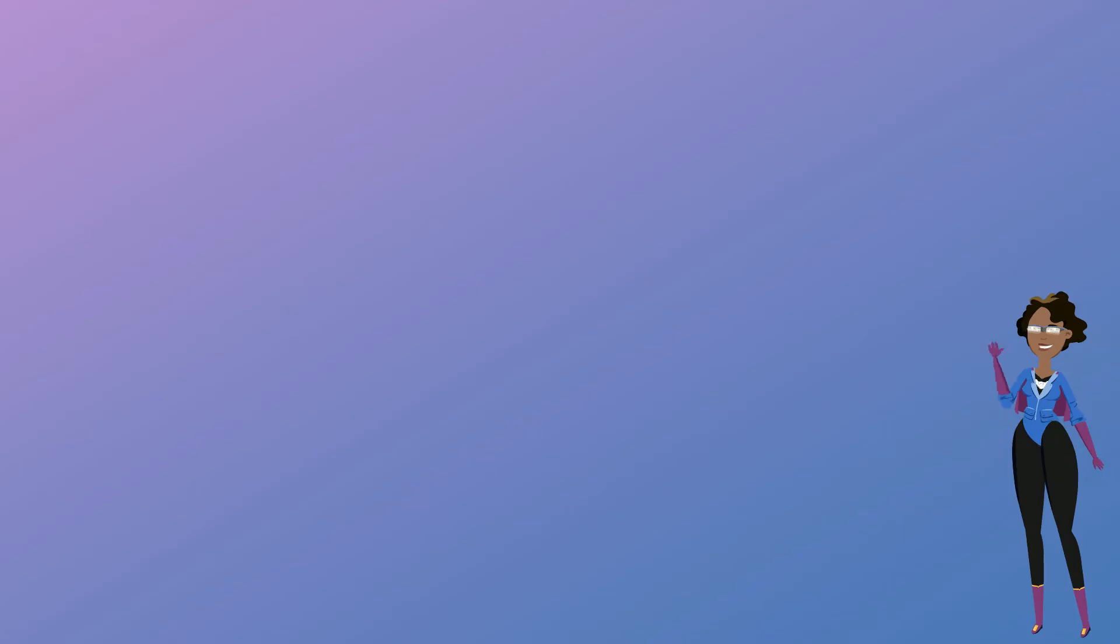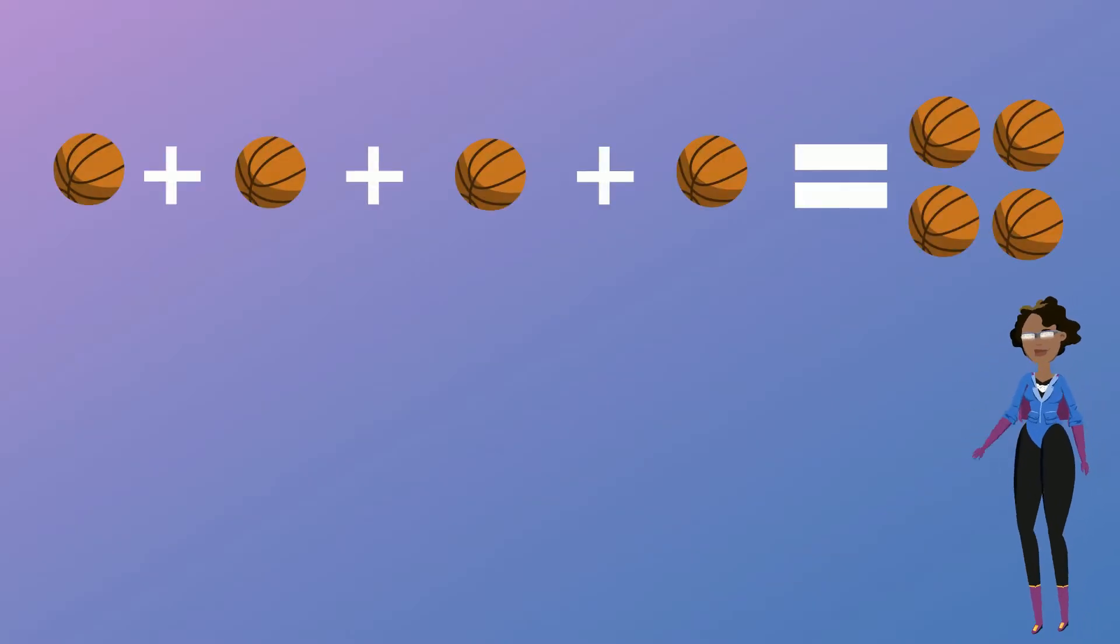To multiply means to add equal groups. When we multiply the number of things in the groups, the group increases. Repeated addition means to add equal groups or the same number over and over. And that's a simple way to figure out multiplication.